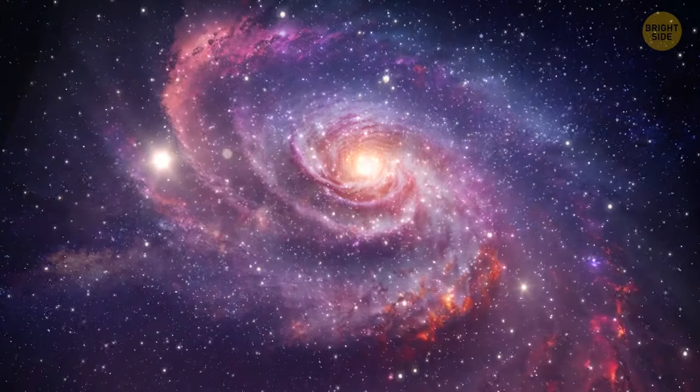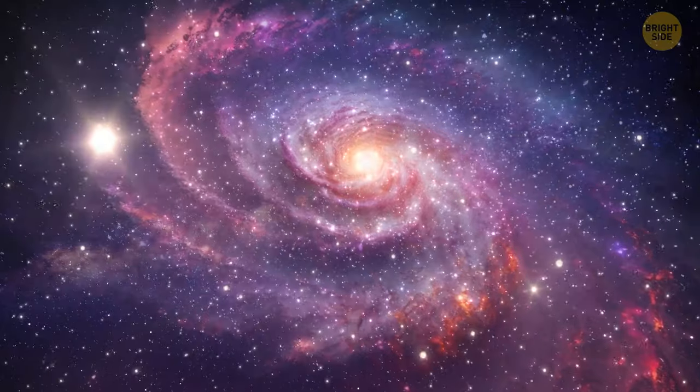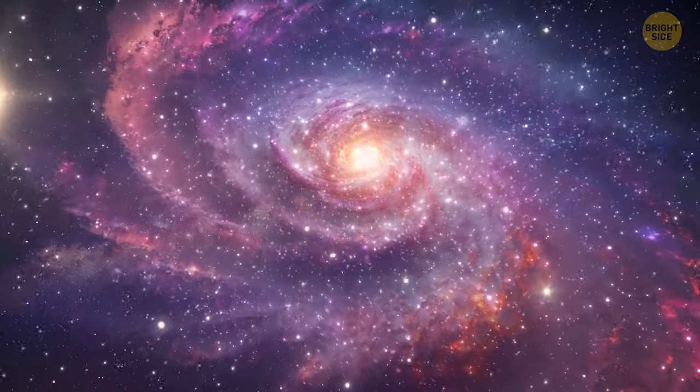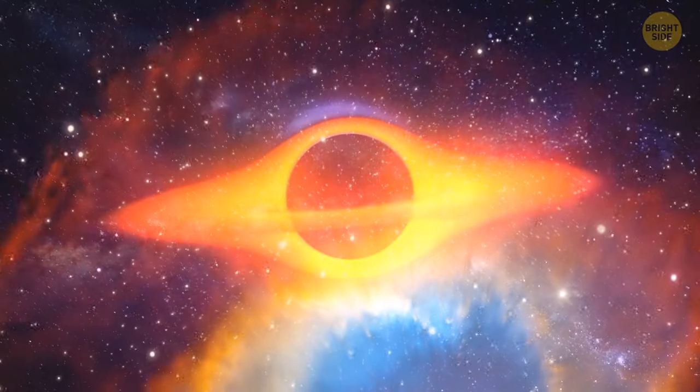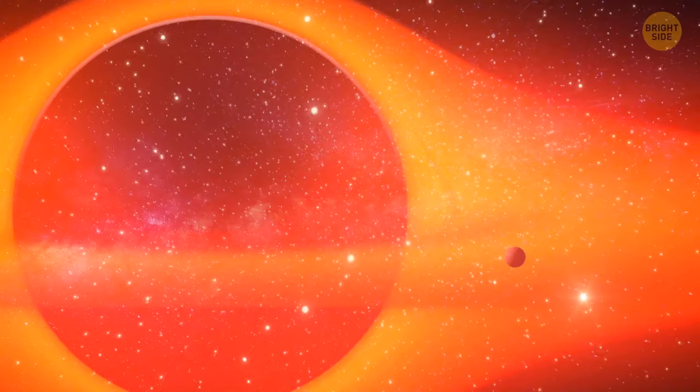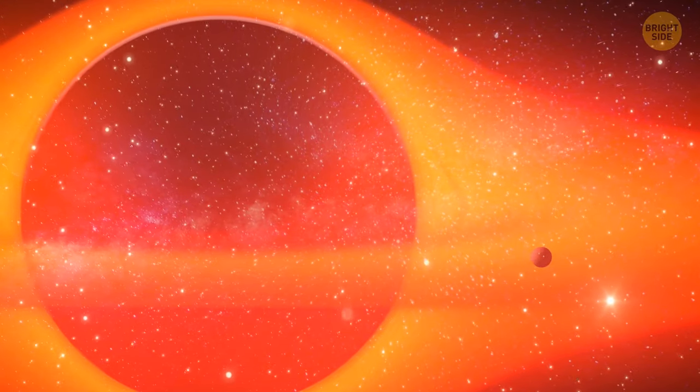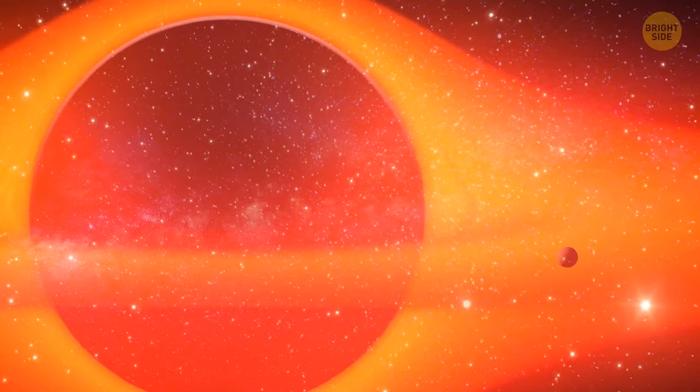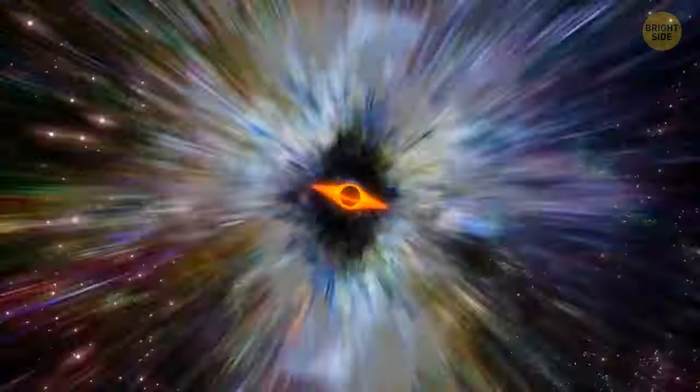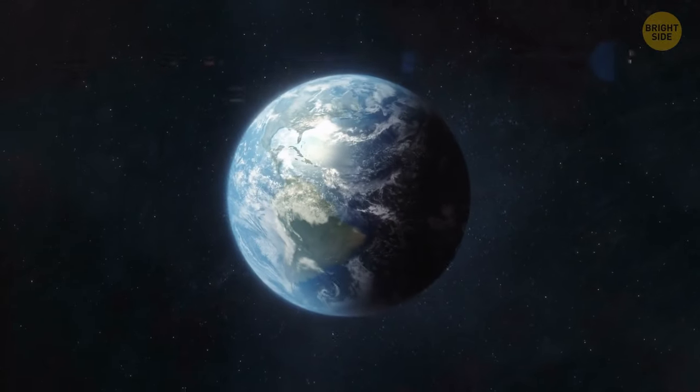There is a supermassive black hole smack dab in the middle of our galaxy, the Milky Way. Its name is Sagittarius A-star. And it's 4.3 million times as heavy as the Sun. And nope, we aren't going to be pulled into this hole. It's more than 26,000 light-years from Earth. Too far to have any influence on our planet.